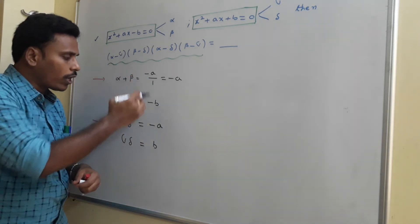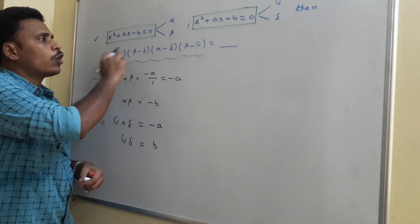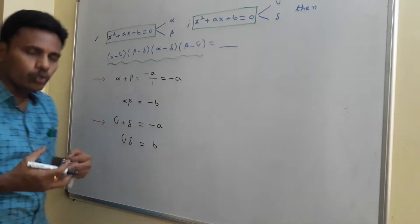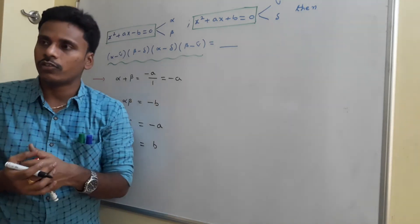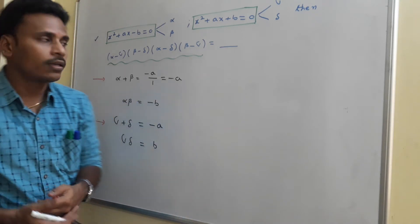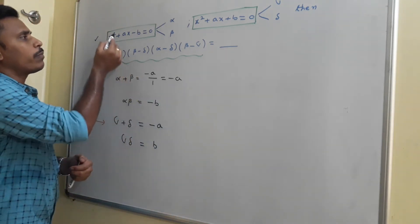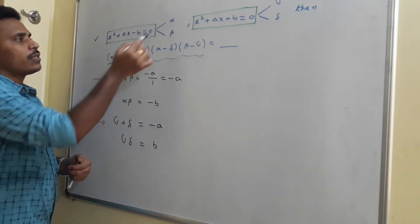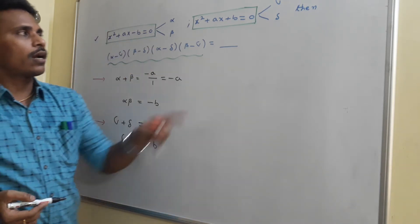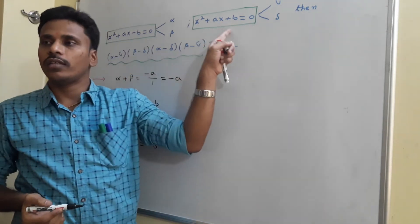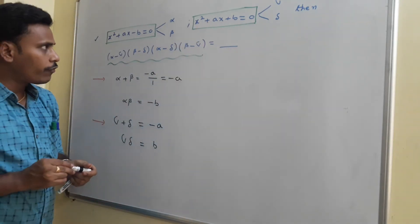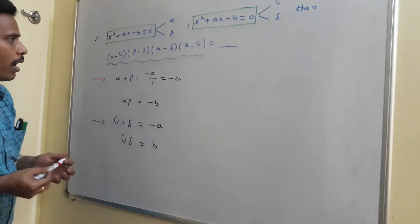We need to utilize the sum and product relations to find the required product value. If needed, we also use the basic definition of a root: if alpha is a root, it must satisfy the equation. Similarly for beta, gamma, and delta.